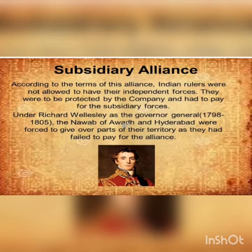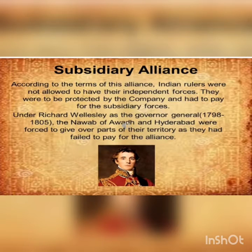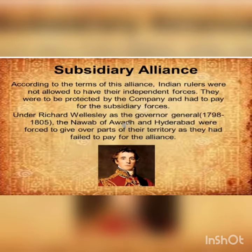Next is the Subsidiary Alliance. According to the terms of this alliance, Indian rulers were not allowed to have their independent forces. They were to be protected by the company and had to pay for the subsidiary forces. This means that an Indian ruler entering into a subsidiary alliance with the British had to accept British forces in his territory and agree to pay for their maintenance. If they failed to pay, they were forced to give over parts of their territory.